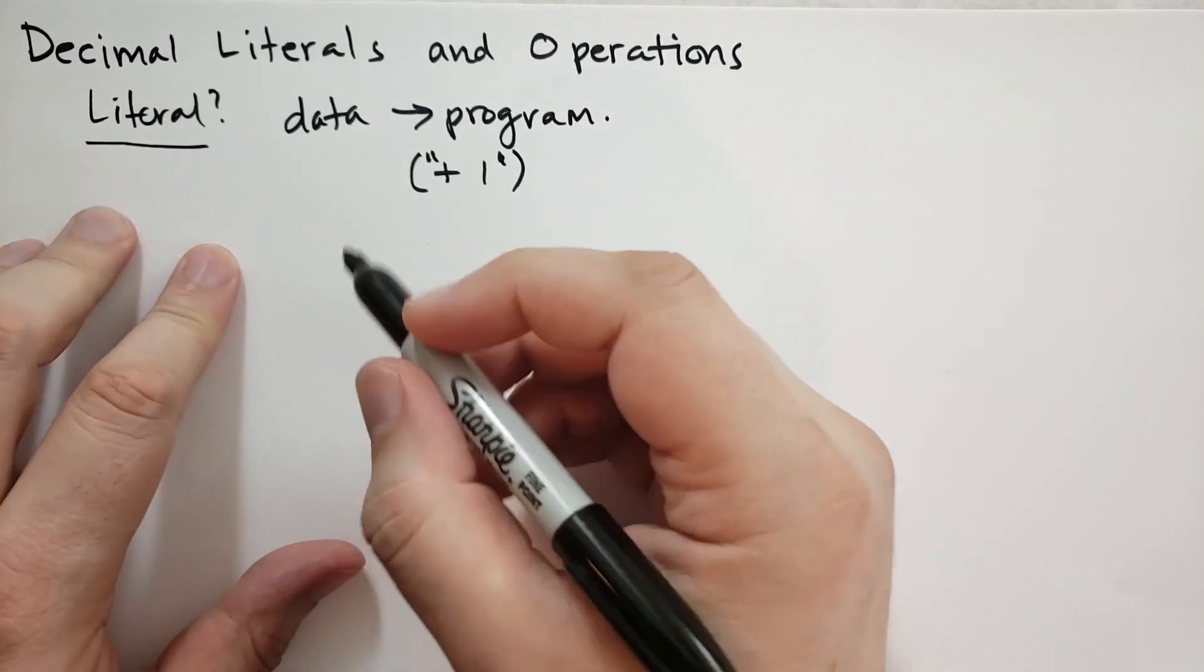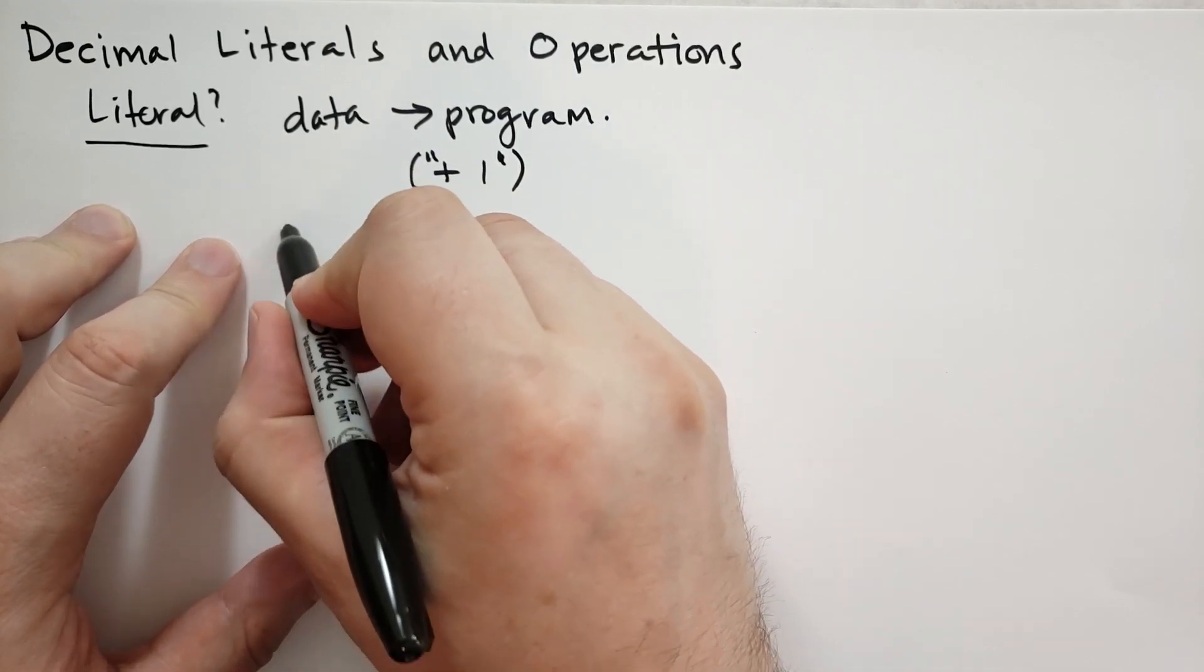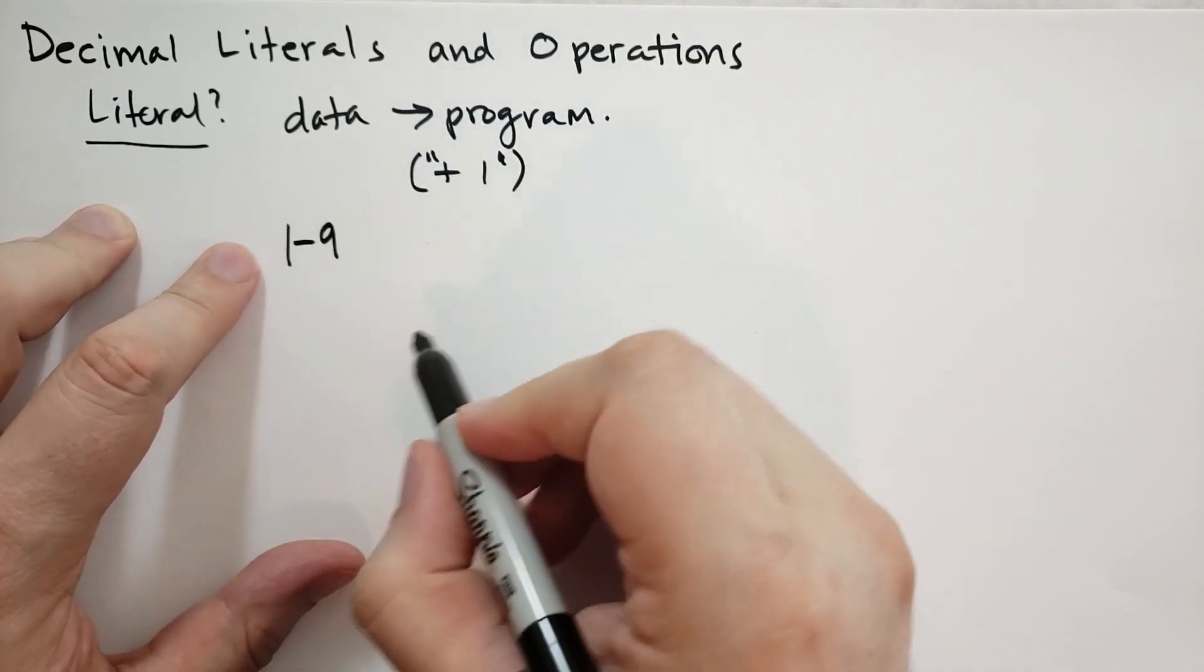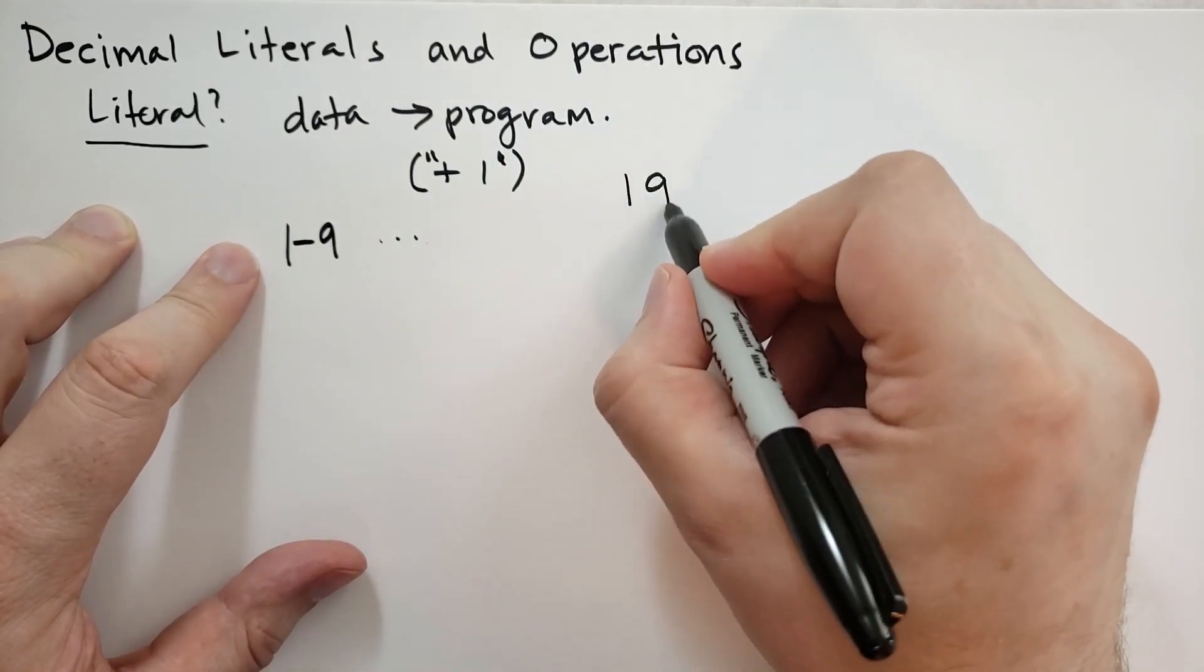In Python, when you write a decimal, you can have any number except zero. So you can start with a one through nine. And then you can have any series of numbers after that, including zeros. For instance, you can have the number 190.